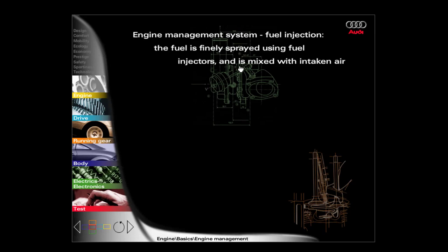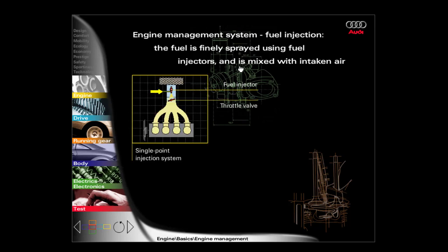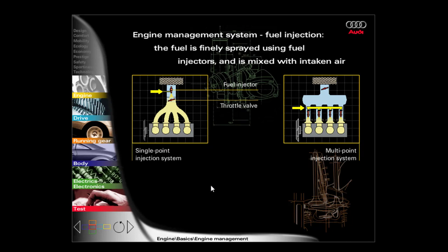In the case of indirect fuel injection, the fuel is nebulised using fuel injectors and is subsequently mixed with intake air. The single point injection system supplies all cylinders with just one fuel injector; the fuel injector sprays the fuel against the throttle valve and the mixture is formed in the inlet manifold. The multi-point injection system is equipped with a separate fuel injector for each cylinder. The fuel injector injects the fuel into the inlet channel and, to a certain extent, via the opened intake valve into the combustion chamber, enabling more even mixture formation in all cylinders.